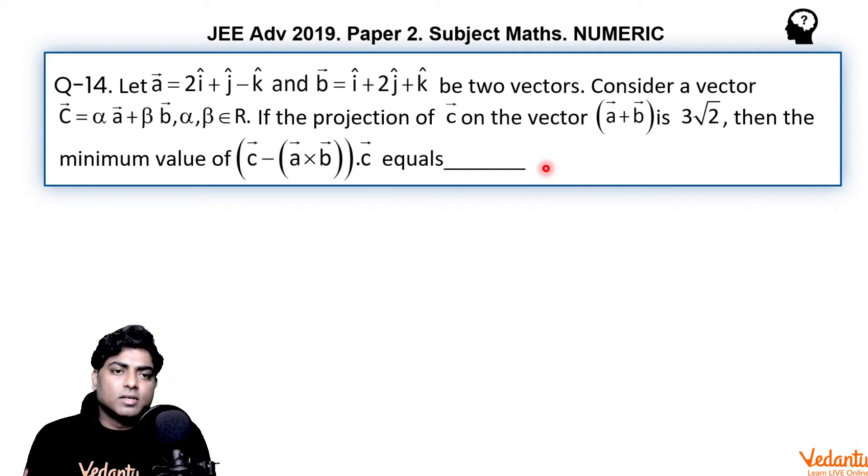If you look at the problem carefully, what is c? c is given as alpha a + beta b, means c is expressed as a linear combination of the two known vectors a and b. It means c is lying in the plane of vector a and b, obviously. So we can start the solution from here.